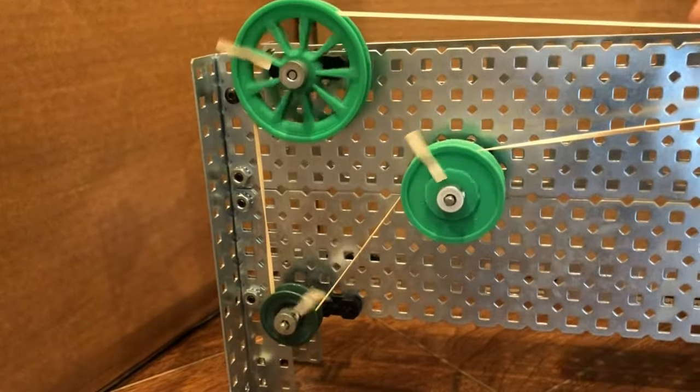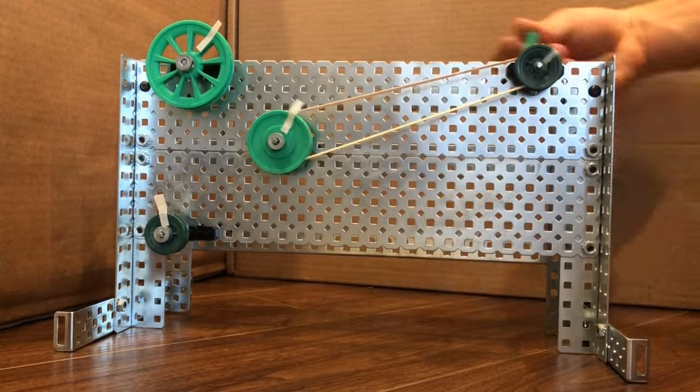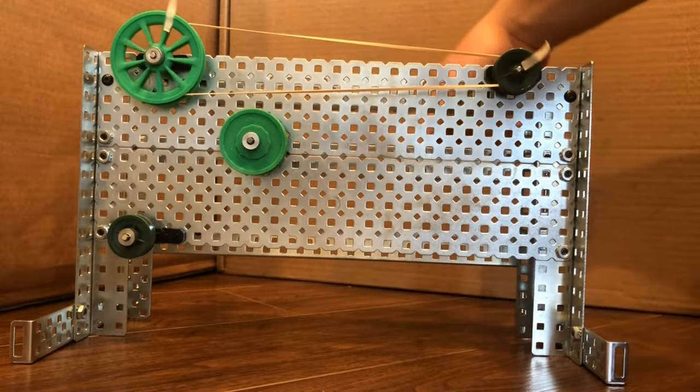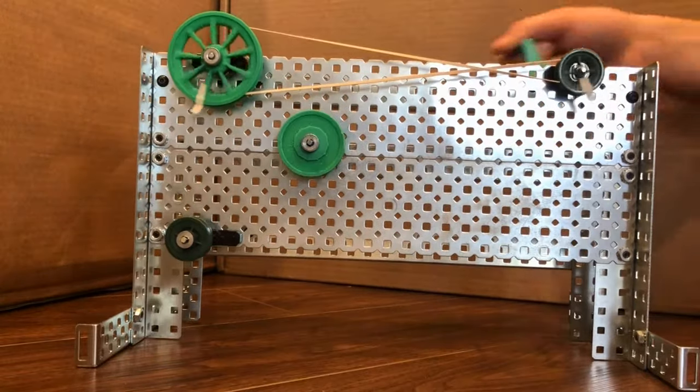A system does not need multiple pulleys to change directions though. A system with just two pulleys and one belt will turn in the same direction with an open belt. When using a cross belt, the pulleys will turn in opposite directions.